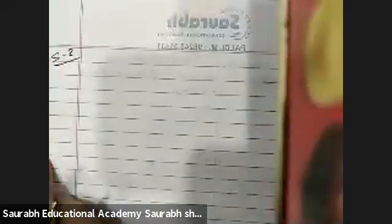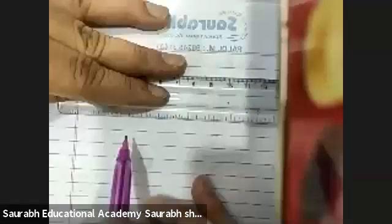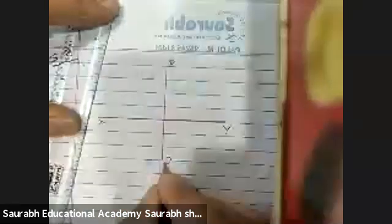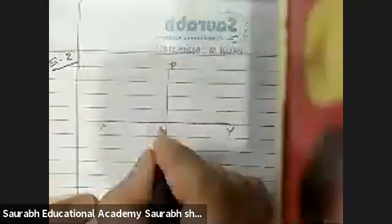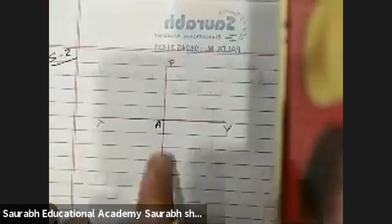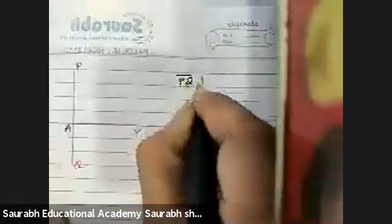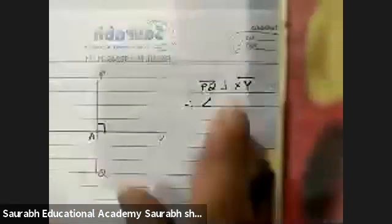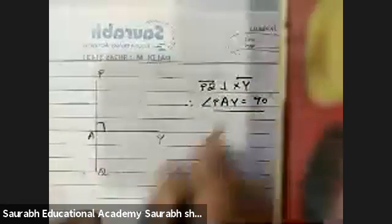Question number two: Let PQ be perpendicular to the line segment XY. I am drawing it, this is your X and Y, and perpendicular PQ. They intersect at the point A. This is the point of intersection A. What is the measure of angle PAY? Now see, you should write PQ is perpendicular to XY, therefore angle PAY is equal to 90 degrees.